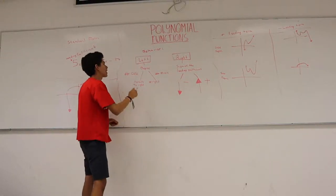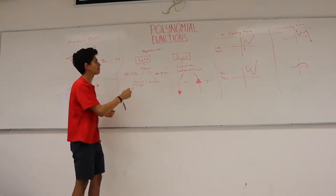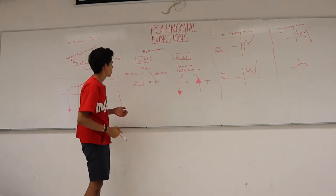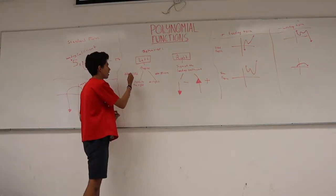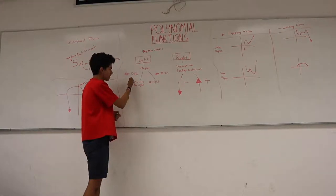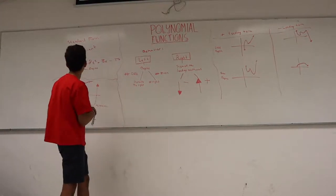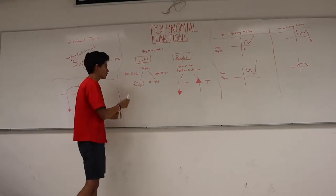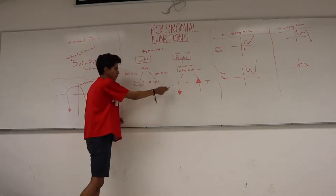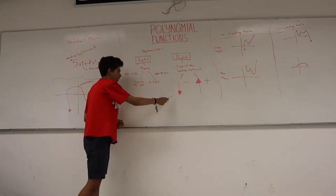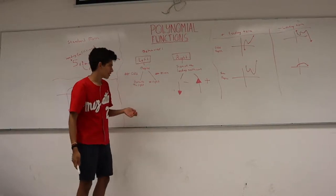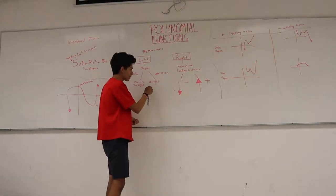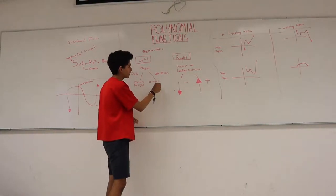The behavior of the left arm follows the behavior of the right arm. If the degree is odd — meaning if the exponent is odd — it's going to do the opposite of the right arm. But if the degree is even, it will do the same as the right arm.